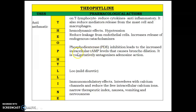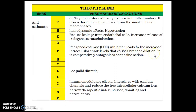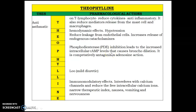Theophylline inhibits an enzyme, phosphodiesterase, which leads to increased intracellular cAMP levels that causes bronchodilation. It also competitively antagonizes adenosine action by inhibiting adenosine receptors, which contributes to the bronchodilatory and anti-asthmatic effect of theophylline.